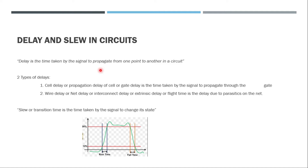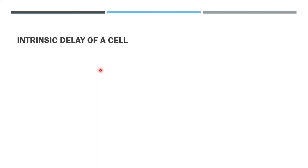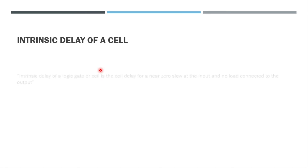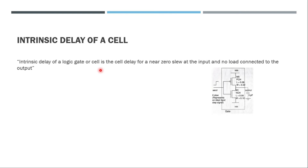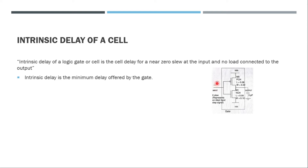Now let's understand cell delay in a little more detail. The intrinsic delay of a cell is the cell delay itself without considering external parameters. Although a cell cannot be isolated completely since it is connected to its inputs and outputs, cell delay is a function of input slew and output load or capacitance. Intrinsic delay is defined for a logic gate as the cell delay for near-zero slew at the input and no load connected at the output — it is essentially the minimum delay offered by the cell.